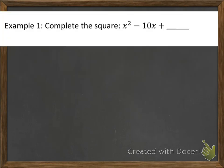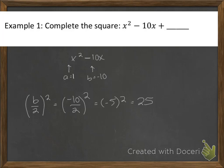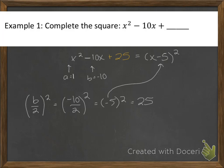Example 1: we have x squared minus 10x. Our a is 1 and our b is negative 10. In order to create a perfect square, the thing that has to go here is b over 2, quantity squared. So it's going to be negative 10 over 2, quantity squared — that's negative 5 quantity squared, which is positive 25. Notice that since we're squaring this, the c term is always going to be positive. So x squared minus 10x plus 25 is a perfect square, and we can write it as x minus 5, quantity squared.